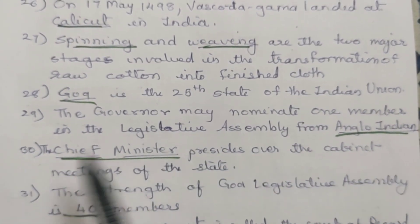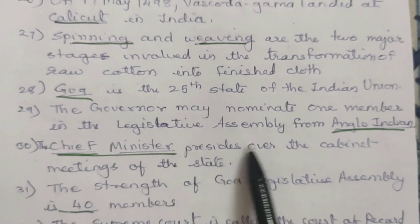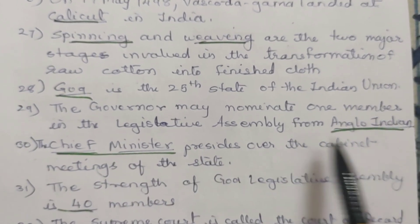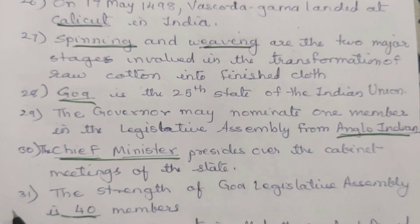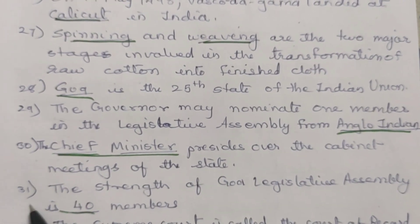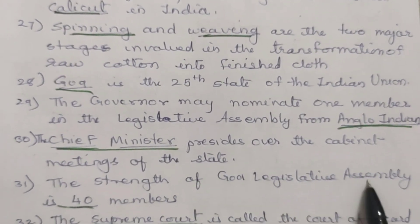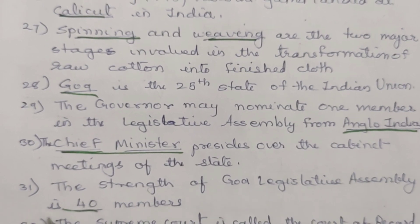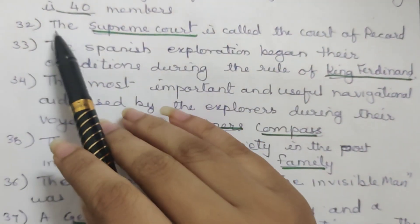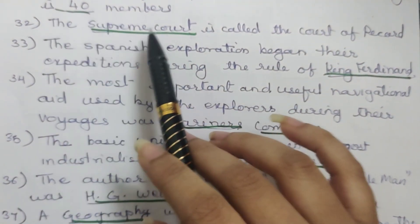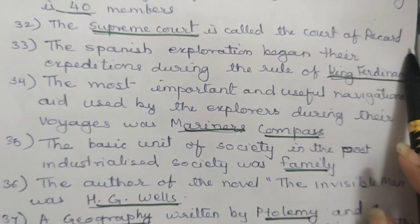30. The Chief Minister presides over the cabinet meetings of the state. 31. The strength of the Goa Legislative Assembly is 40 members. 32. The Supreme Court is called the Court of Record.